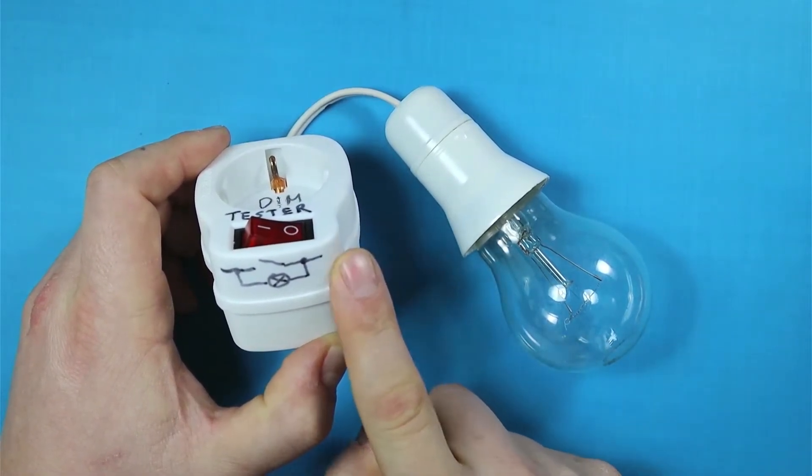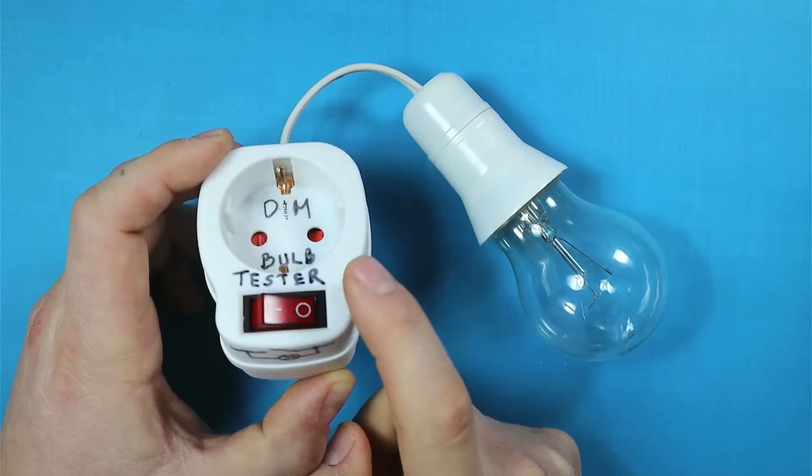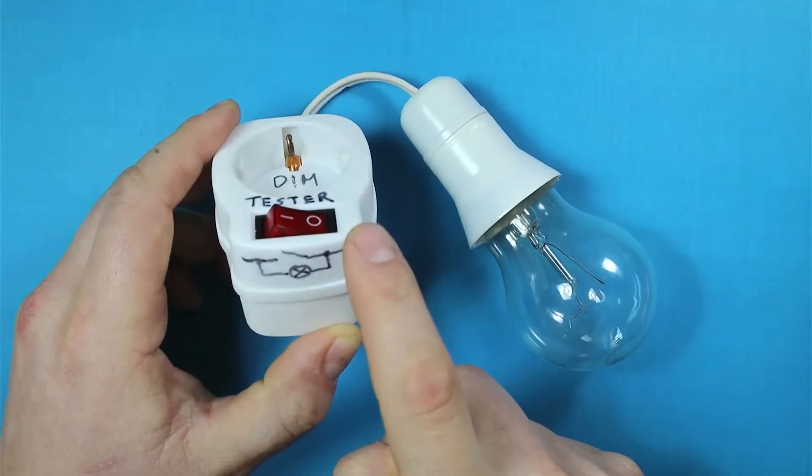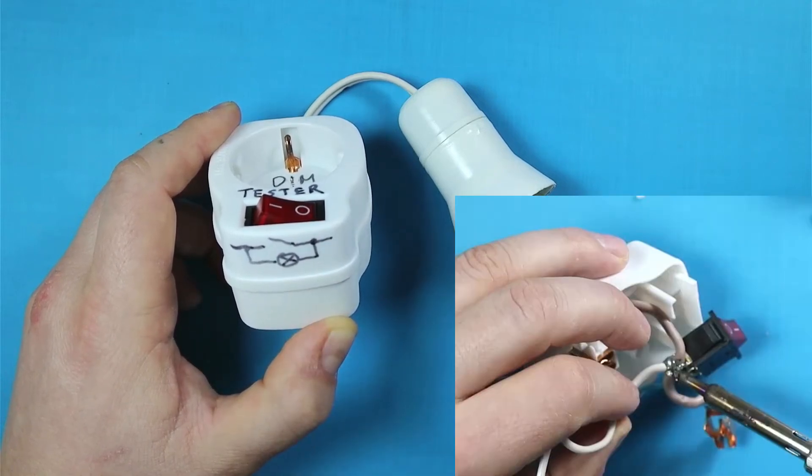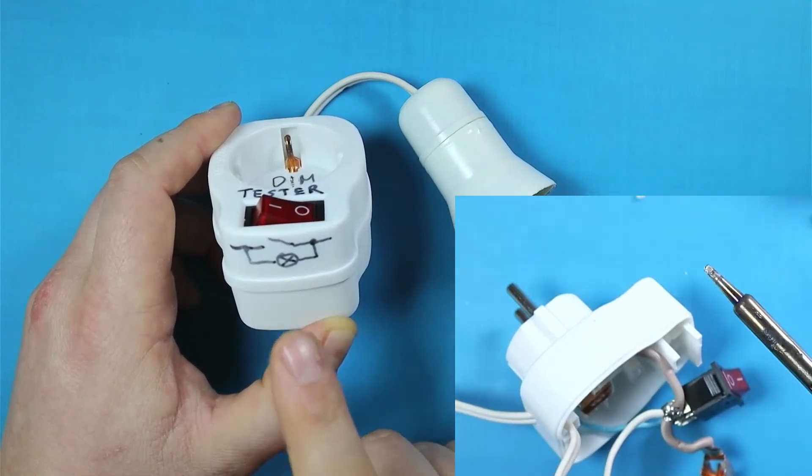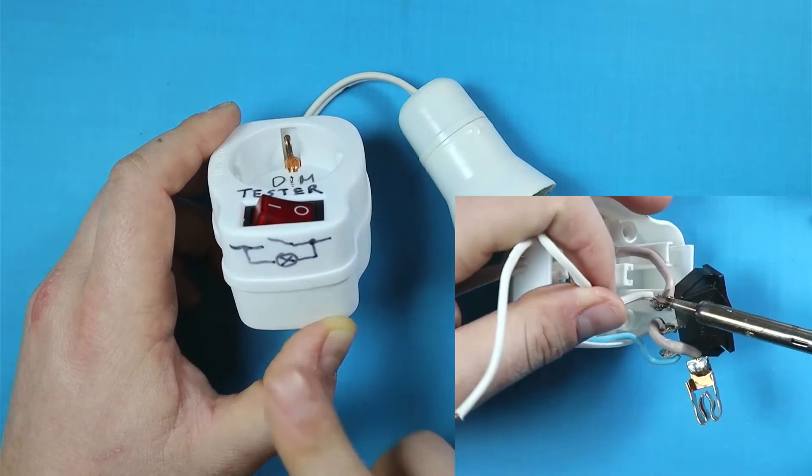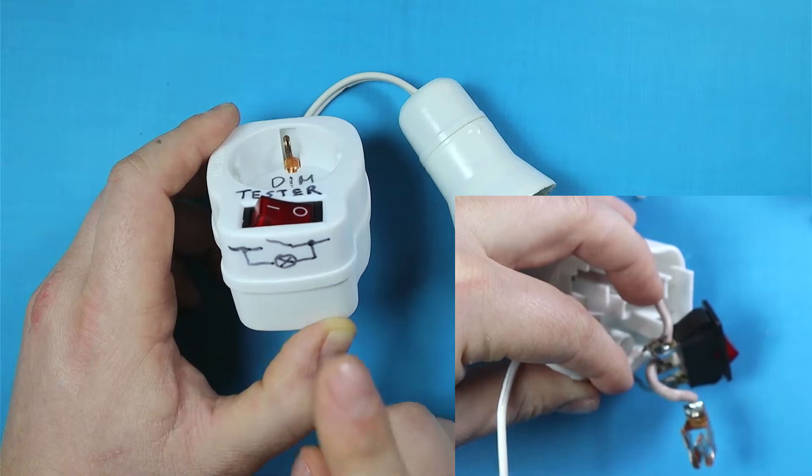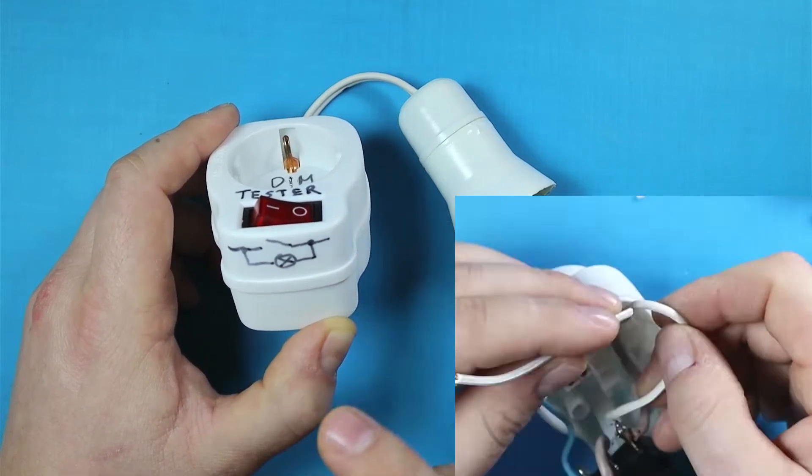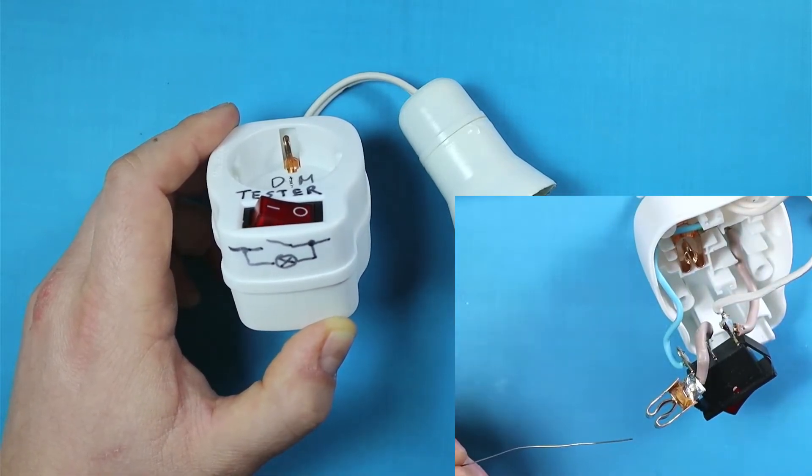The idea is that whatever device we have plugged in that is under test, we are current limiting that device through the bulb. This is really important if we want to prevent any explosions or prevent anything going bang on us or making even more damage on the device.